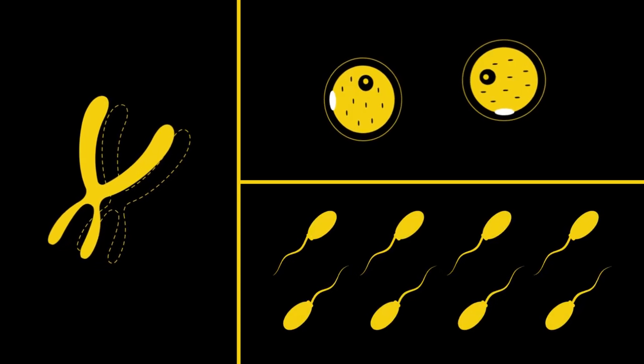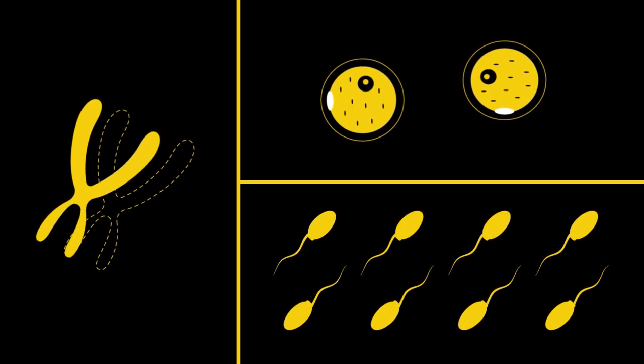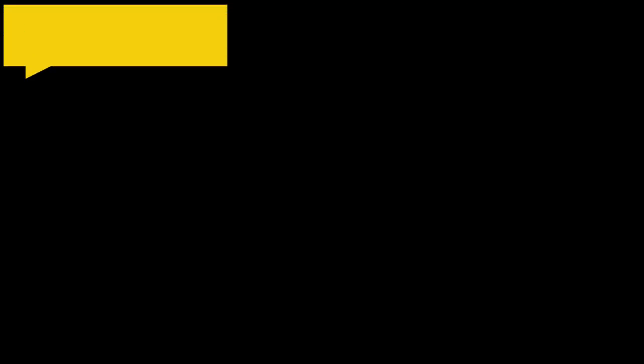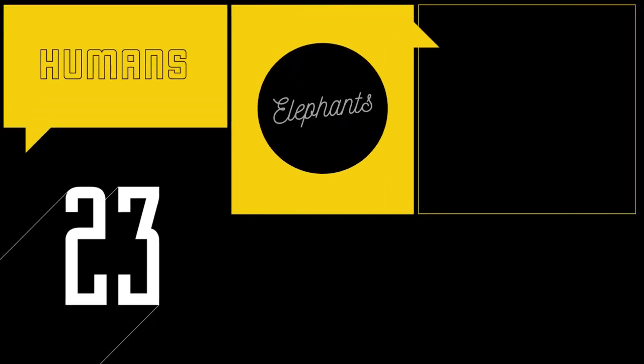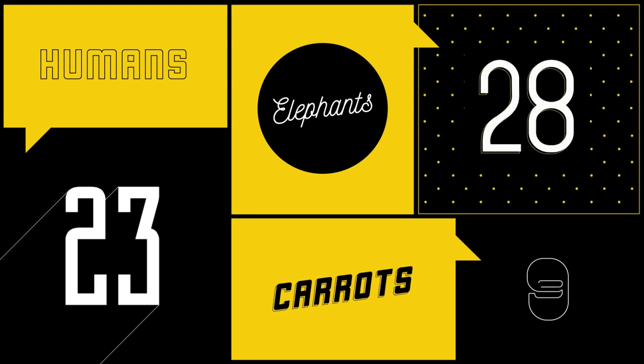Chromosomes usually occur in pairs, except for gametes, which are eggs and sperm cells. But the number of chromosomes changes depending upon species. Humans have 23 pairs, elephants have 28 pairs and carrot plants have 9 pairs.